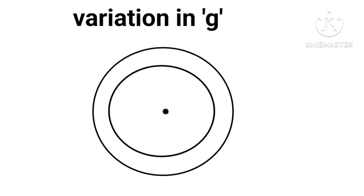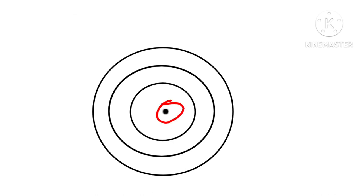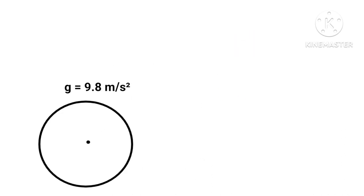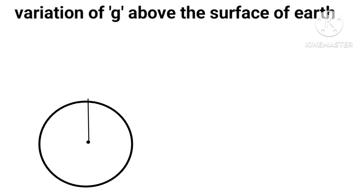The earth can be considered to be made up of concentric spherical shells, with the smallest one at the center and the largest at its surface. The question is how does g vary within, on the surface, or outside the surface of the earth? We know g on the surface of earth is 9.8 meters per second squared. Let acceleration on the surface of earth of radius R be g, and we need to find the acceleration above the surface at height h at point P — let it be g dash.